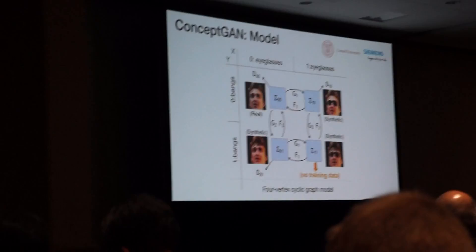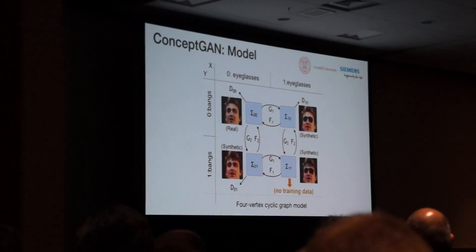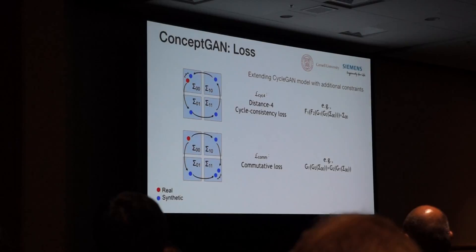To encourage the transferability and compositionality of concepts learned, we extend the cycle consistency idea of CycleGAN to further constrain the model with a four-cycle consistency loss. For example, consider a face image: we would like to be able to reconstruct the face of the same identity after adding eyeglasses, adding beards, taking away eyeglasses, and taking away beards.